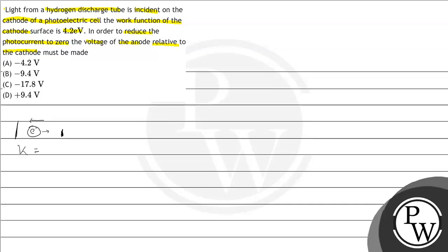We have to apply a stopping potential to provide the opposing force. The key concept here is: the kinetic energy of the photoelectron is equal to e into stopping potential.